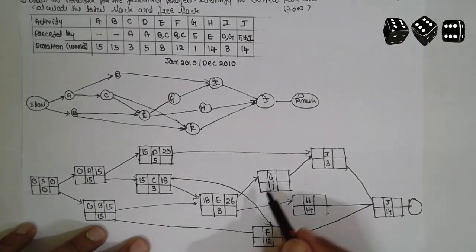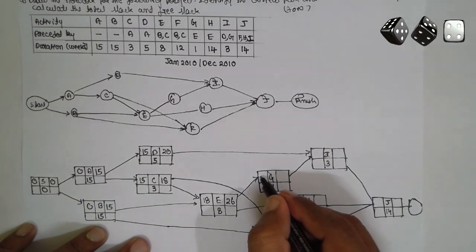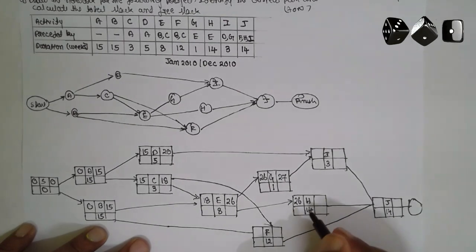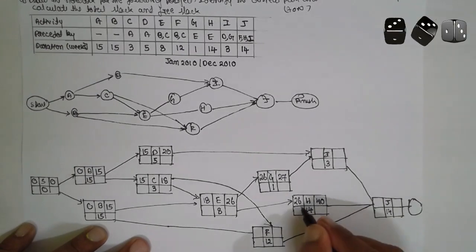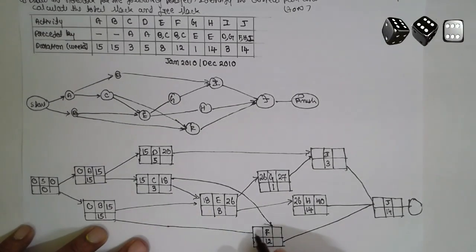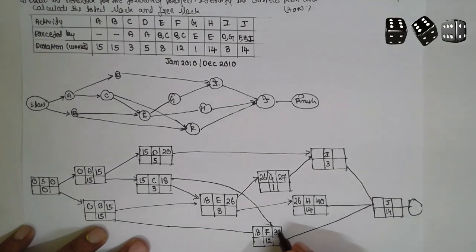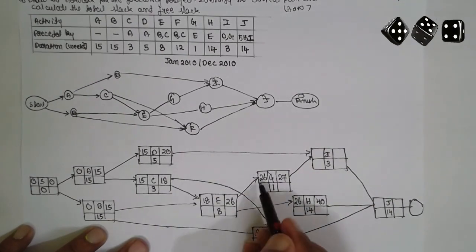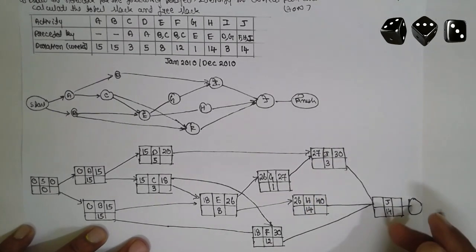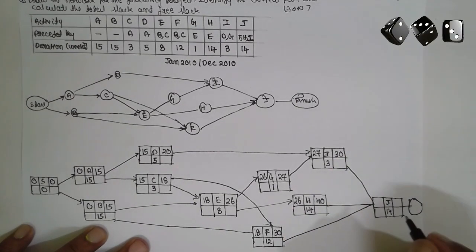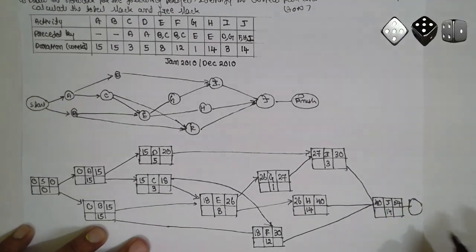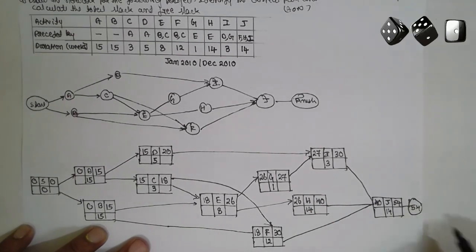26 — further here, move 26. 26 plus 1 equals 27. Move here, it is 26. 26 plus 14 equals 40. For F, 15 or 18 — select the larger value 18. 18 plus 12 equals 30. At I, it will be 20 or 27 — select the larger value 27. 27 plus 3 equals 30. Here select the larger: 40 or 30, so 40. Write 40. 40 plus 14 equals 54.